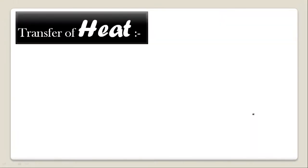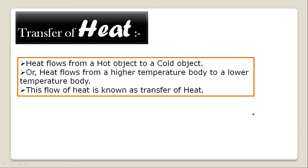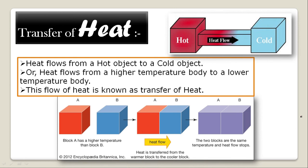Moving forward, the next topic is transfer of heat. Heat flows from a hot object to a cold object — that is, heat flows from a higher temperature body to a lower temperature body. In figures shown, block A is the hotter body with high temperature, and block B is the cold body with low temperature.